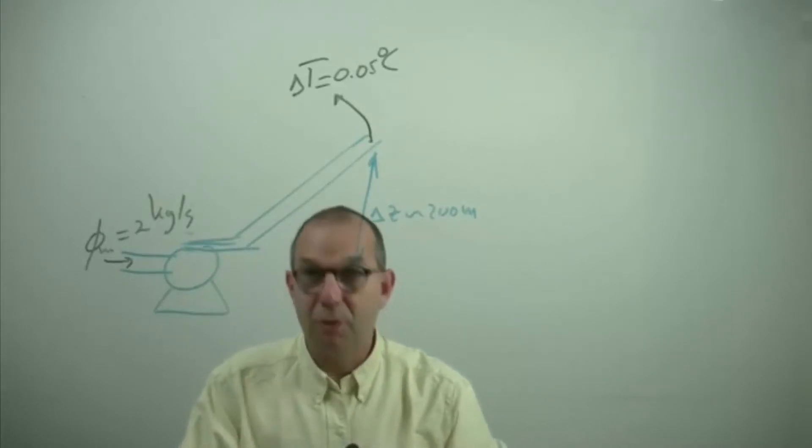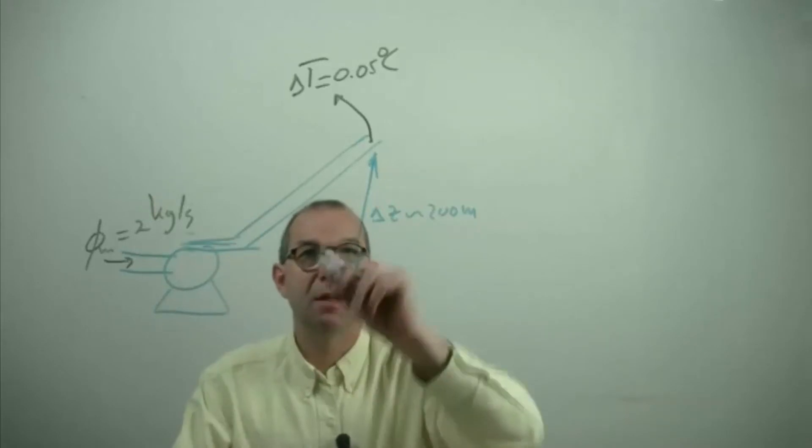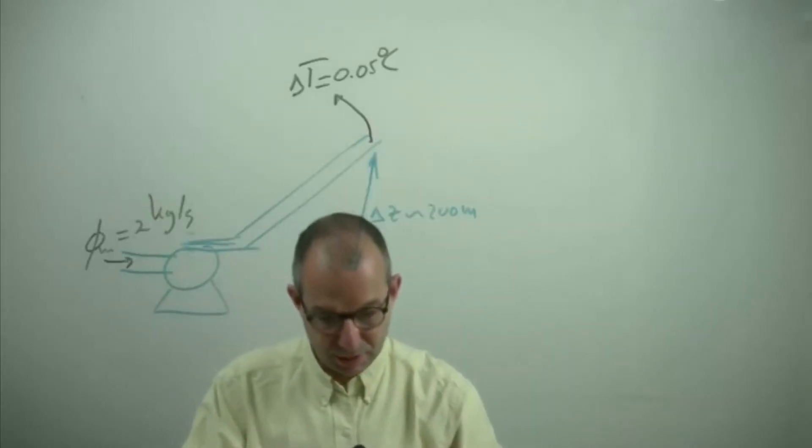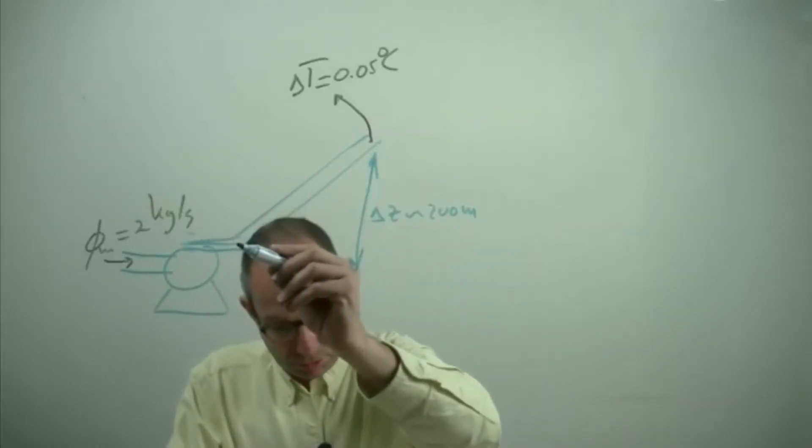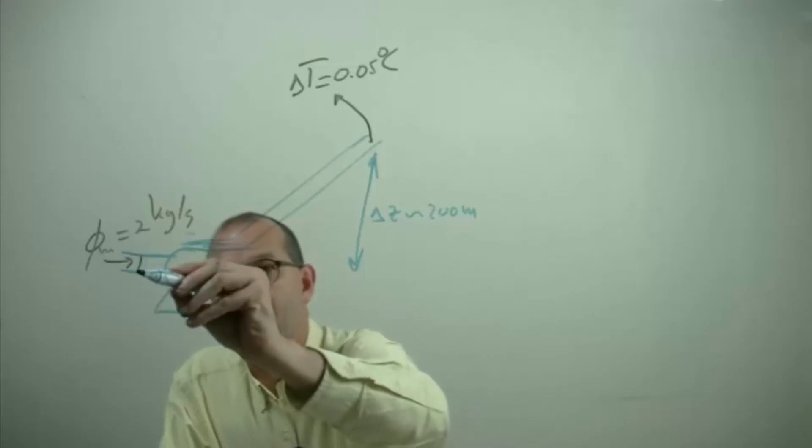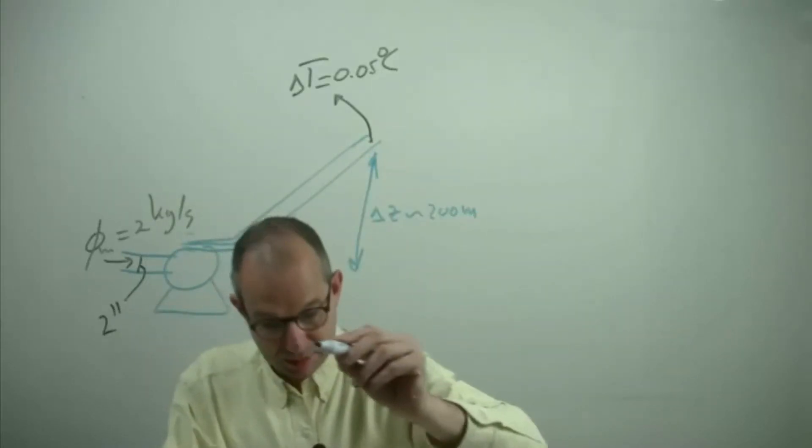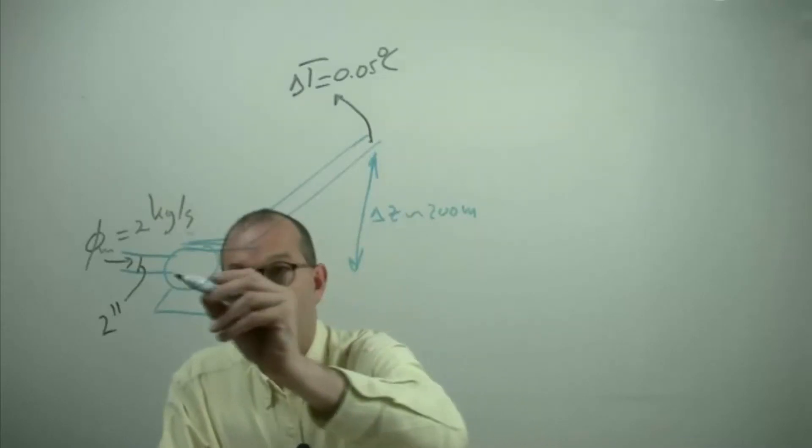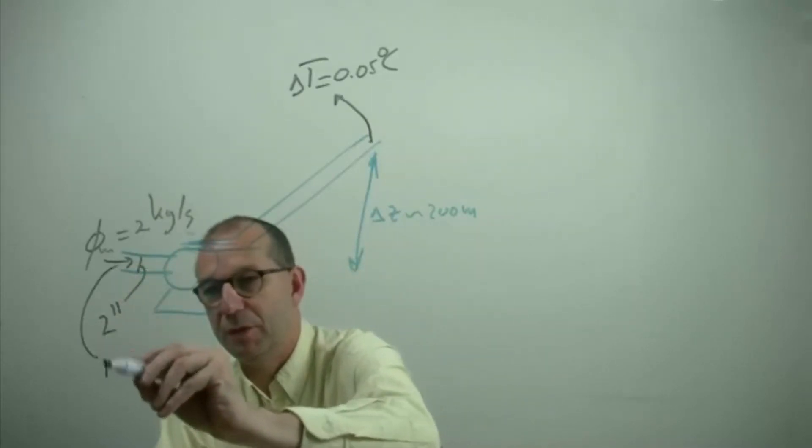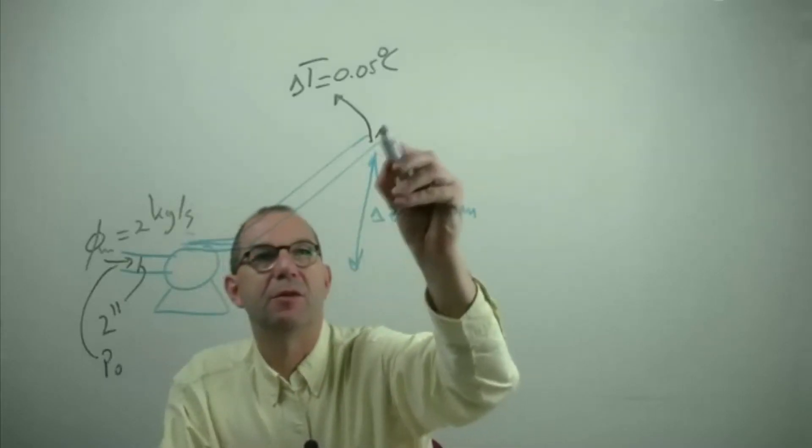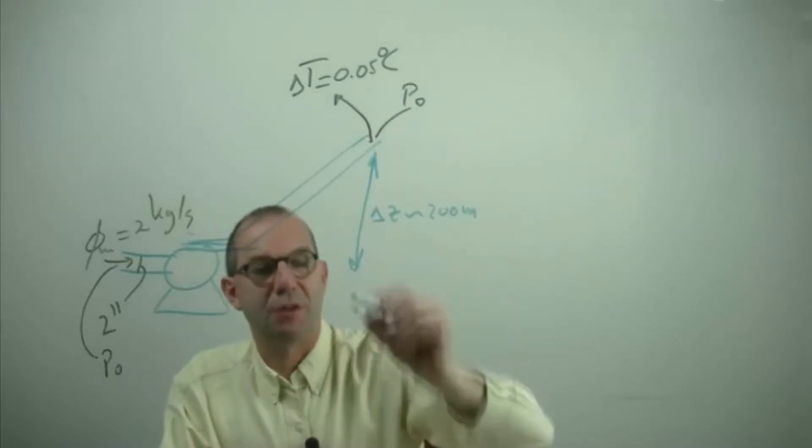The water originally starts at 20 degrees, is heated up a little bit and the tube has a diameter of 2 inch everywhere. Water comes in at atmospheric pressure and it leaves also at atmospheric pressure.